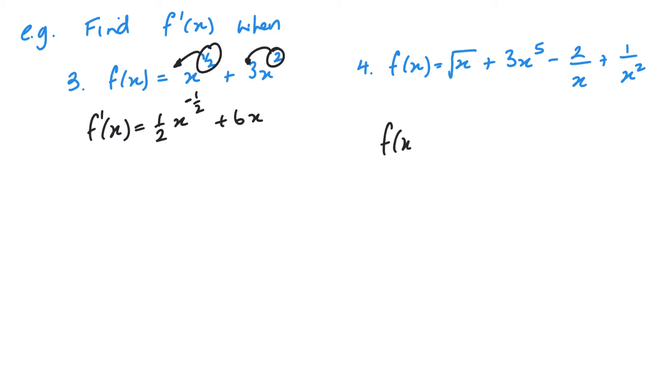So the first thing I want to do is rewrite this f of x. So it's in a form that I can do. So x to the power negative 2. Now we can go ahead and differentiate it. So that will give me a half x to the negative half plus 15x to the power 4. Now I'm multiplying by minus 1 here. So it's going to be plus 2x to the power negative 2. Minus 2x to the power negative 3.